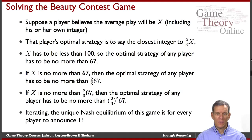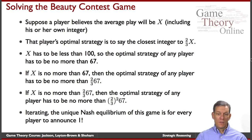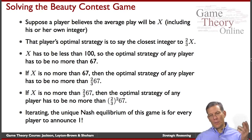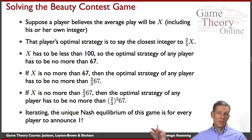The unique Nash Equilibrium of this game is for every player to announce one. We're driven all the way down to announcing one. What happens: we all announce one, we all tie, and somebody wins at random. If I tried to deviate — if I tried to announce a higher integer — I'd just be higher than the average guess, so I wouldn't be at two-thirds of the mean. So this is going to be a stable point.